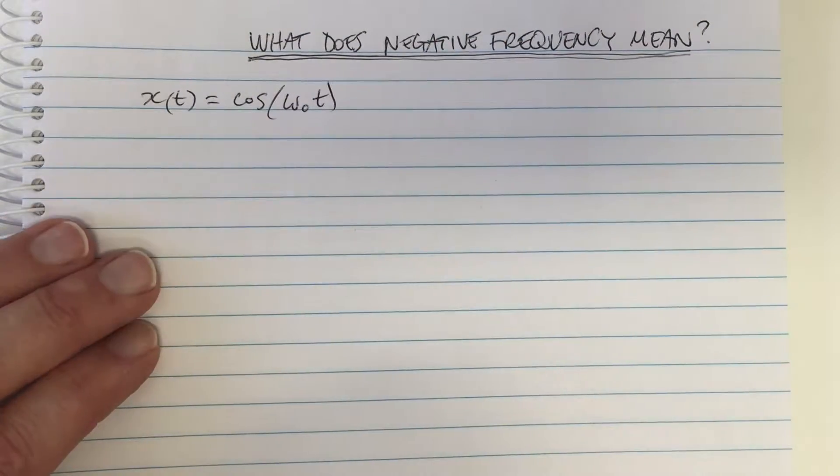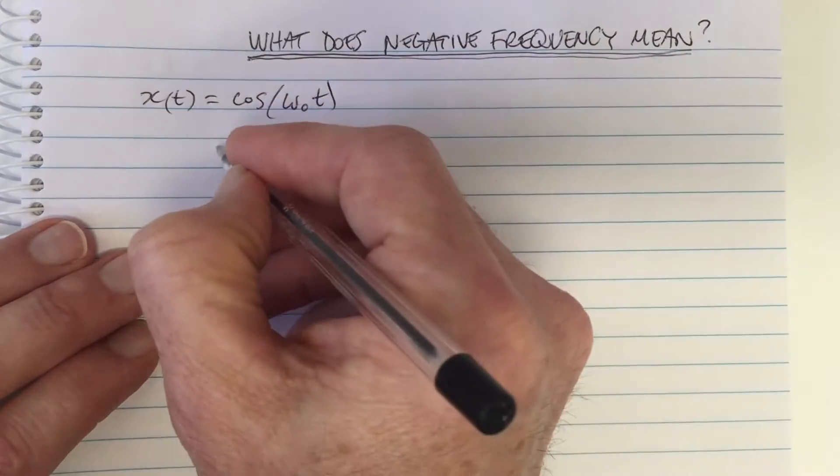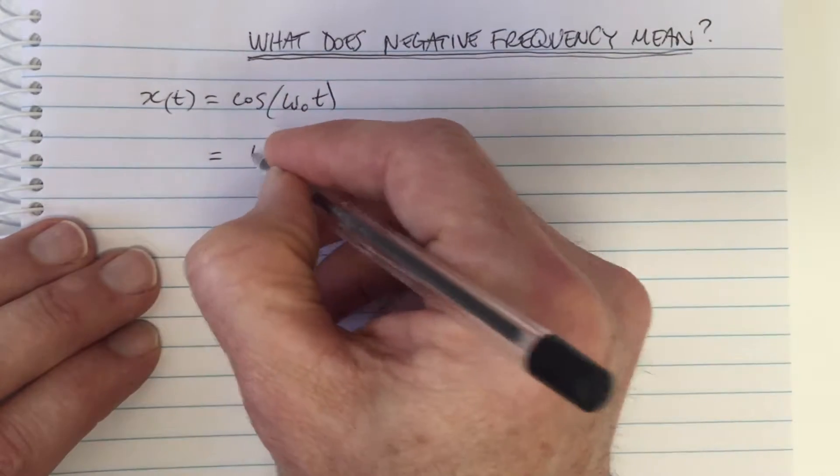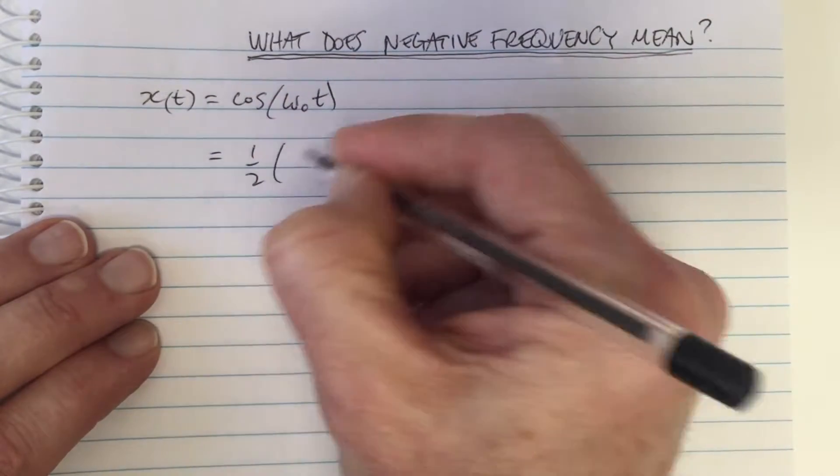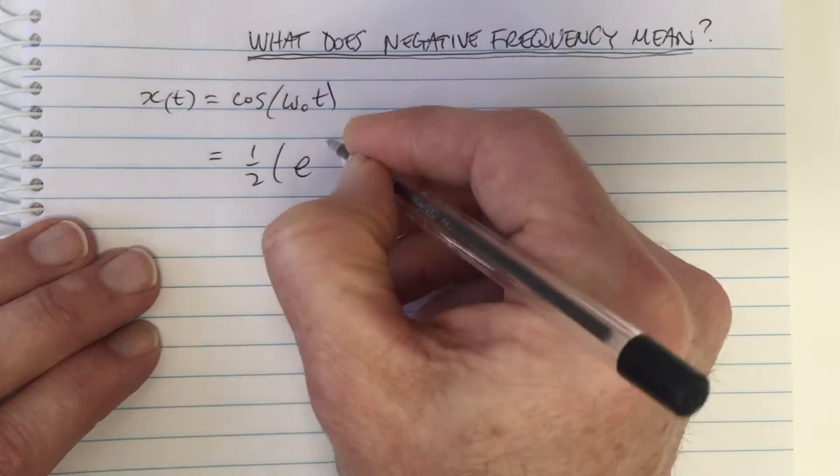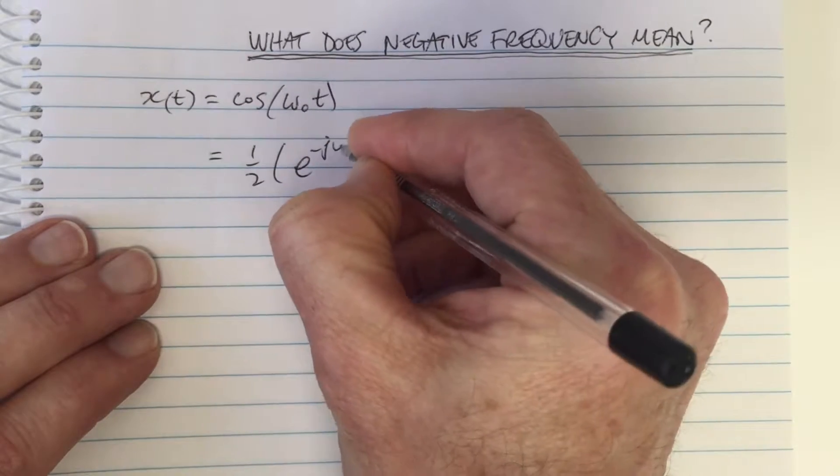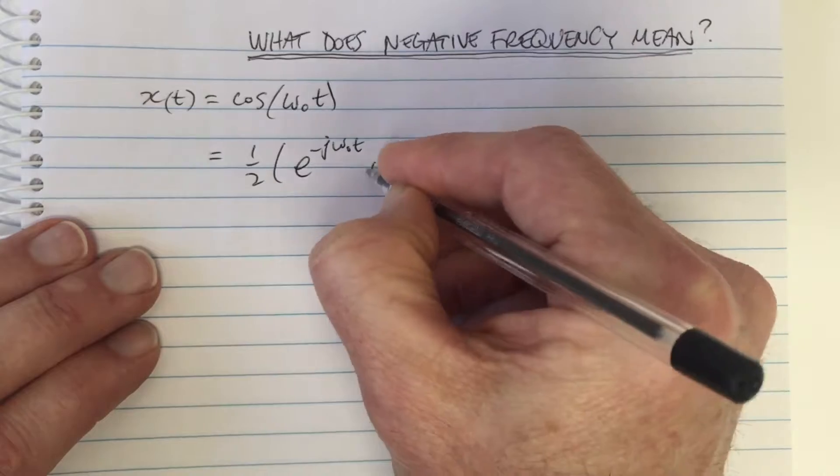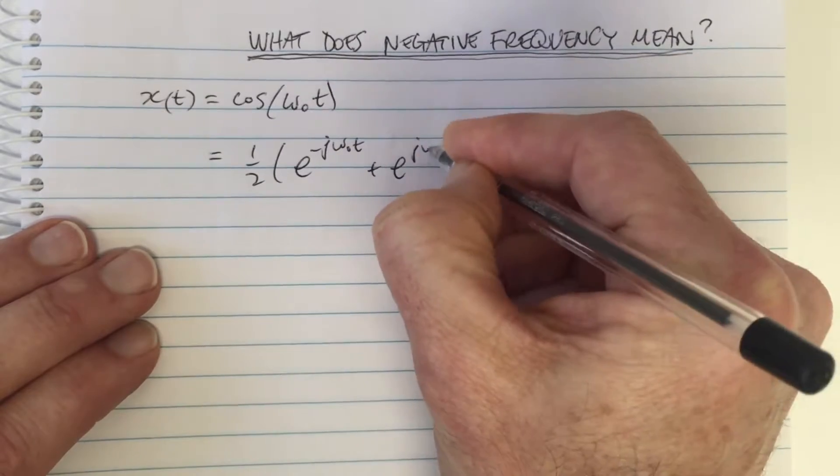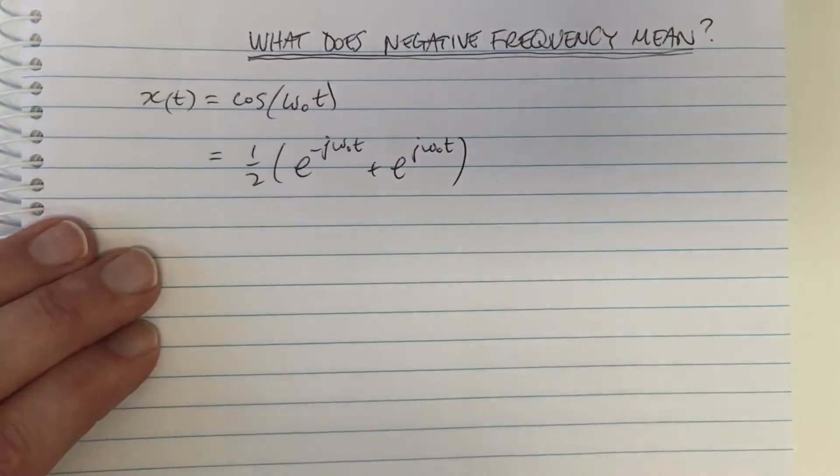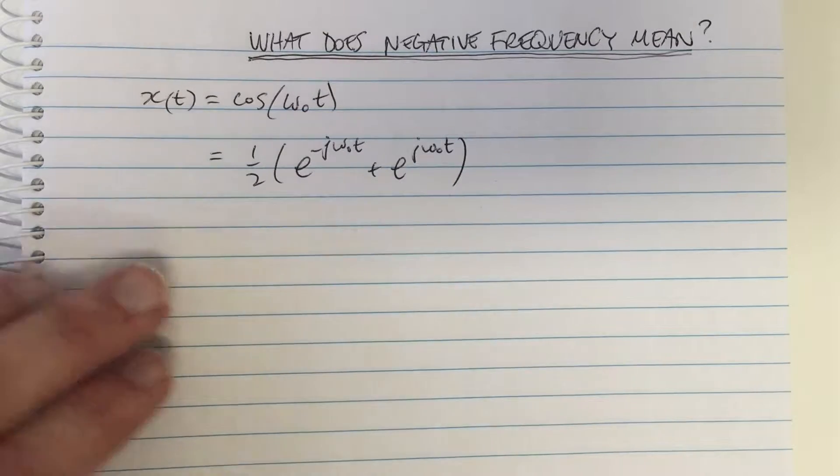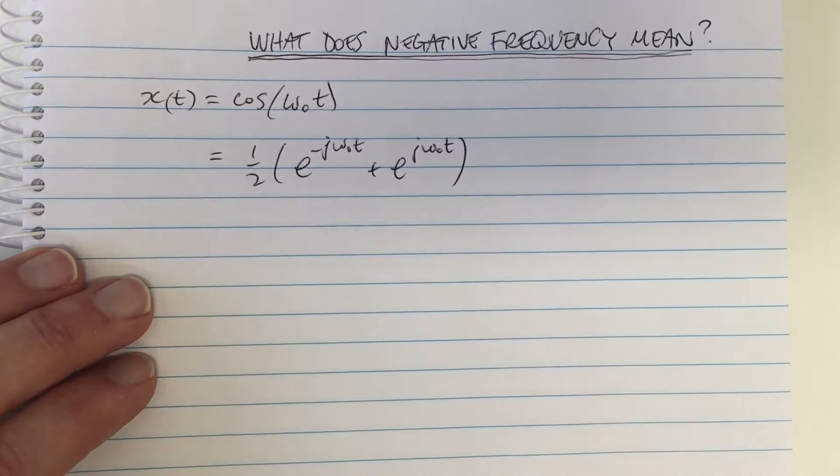So another way of representing this is in complex exponentials, so let's do this now. So it's e to the minus j omega 0 t plus e to the j omega 0 t times half. So this is a way of representing the cos waveform.